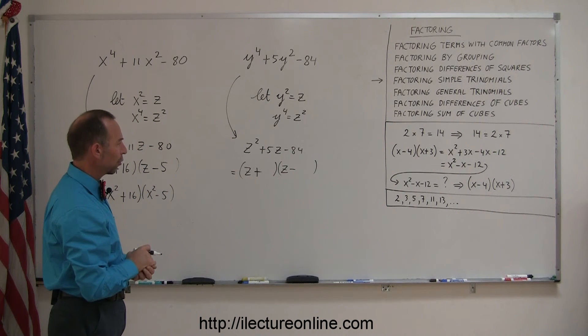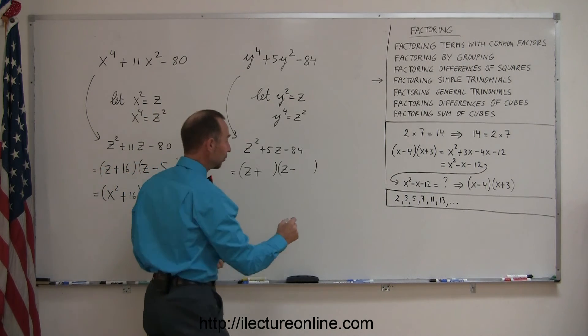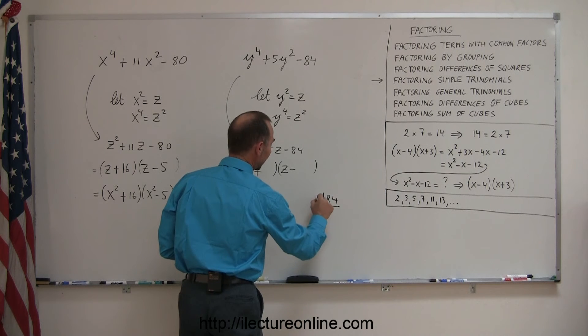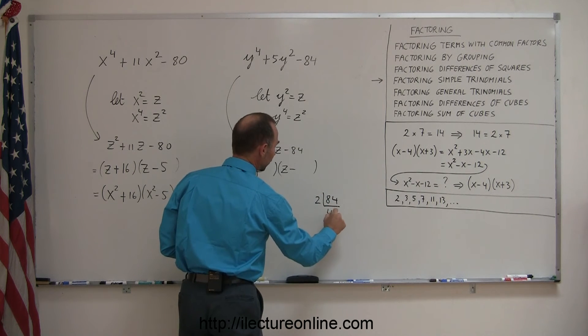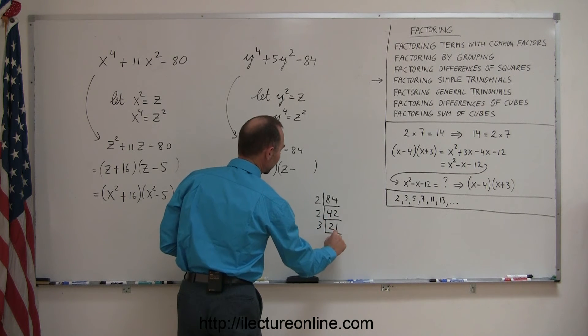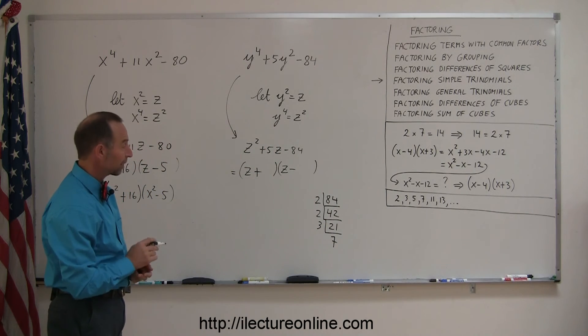So how do you get 84? Now this is a little bit more difficult to do, and sometimes what helps is to find all the factors of 84. So 84 can be divided by 2 to give you 42, which can be divided by 2 to give you 21, which can be divided by 3, which gives you 7. So 84 is really the product of 2 times 2 times 3 times 7.